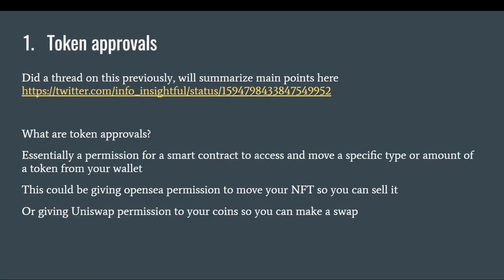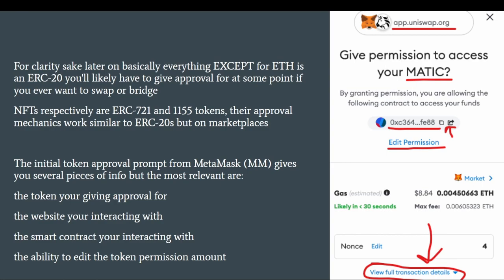Every type of scam can generally be boiled down to one of those two categories. I did a thread previously on token approvals if you want to read that, but I'm basically going to do a shorter version here. Token approvals are basically giving a smart contract access to move a specific type of token or asset from your wallet. This is most commonly seen on OpenSea, where you give the OpenSea contract permission to move an NFT on your behalf when you want to sell it, or with tokens — like giving Uniswap permission to swap your coins.